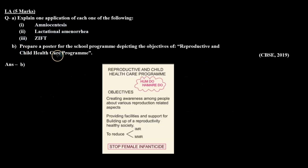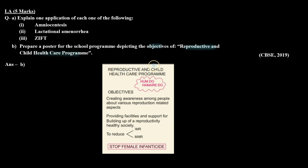For B part, we need to make a poster depicting the objectives of the reproductive and child healthcare program. This is just one example — you can make other posters too, but make sure to mention the objectives in that poster. I hope this question is clear to you. Thank you.